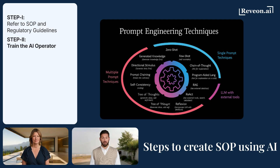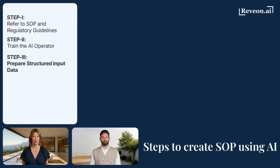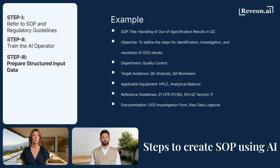So training someone on how to ask the right things is just as important as the AI itself. Once your operator is trained, they need to identify all relevant details specific to the type of SOP they want to create. For example, if you're drafting an SOP for handling out-of-specification (OOS) results in quality control, the inputs might include SOP title, objective, department, target audience, applicable equipment, reference guidelines and documentation. This context helps the AI draft content that is specific, compliant and relevant to the intended procedure.